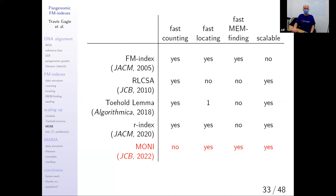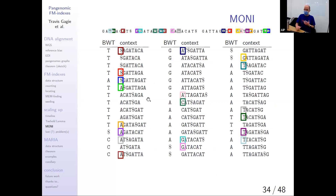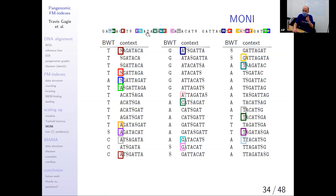They needed MEM finding and were willing to give up counting to get it. So they wrote software called MONI — short for multi — which is basically the toehold lemma plus a data structure called the longest common extension, or LCE, data structure. An LCE data structure: if you know two positions in the data set, it can quickly tell you how far they match. For example, TACHAT versus TAGAT — it comes back with two because TAC and TAG match on TA.